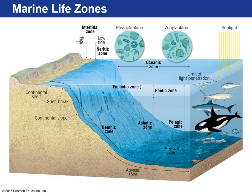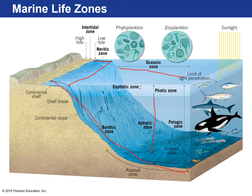To summarize the zones: the aphotic zone is beyond the shelf break in the oceanic zone. The intertidal zone is where land meets sea. The neritic zone is on the continental shelf. The benthic zone covers all sea bottom, with the abyssal zone as a subdivision.